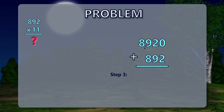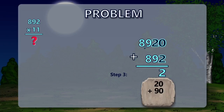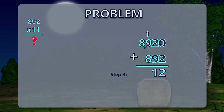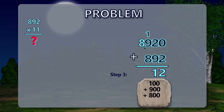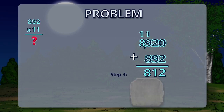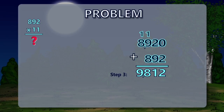Now let's add up the answers from the first two problems. 0 plus 2 equals 2. 20 plus 90 equals 110 — we bring up the 1 to the first place and bring down the 10. 100 plus 900 plus 800 equals 1,800 — we bring down the 8 in the hundreds place and put the 1 over the thousands. 1,000 plus 8,000 equals 9,000. So our answer is 9,812.